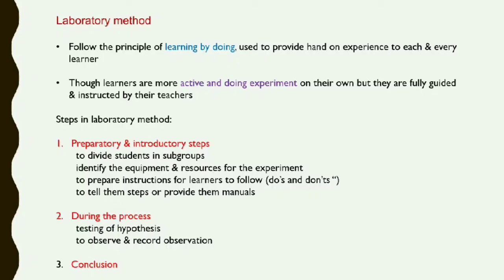The steps of the laboratory method include preparatory and introductory steps. First, students are divided into groups because every child cannot have individual equipment. Equipment and resources are provided, along with instructions for do's and don'ts, plus step-by-step manuals. During the experiment, students create a hypothesis, test it, observe it, and record observations. Finally, a conclusion is drawn from the experiment.